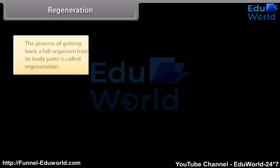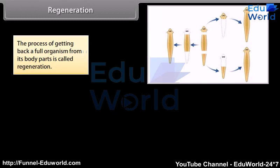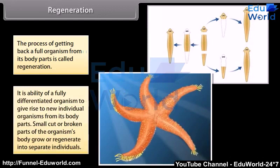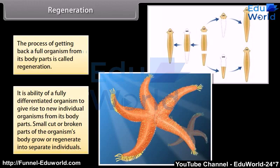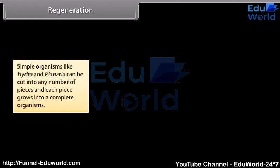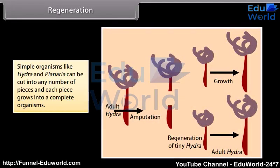The process of getting back a full organism from its body parts is called regeneration. It is the ability of a fully differentiated organism to give rise to new individual organisms from its body parts. Small cut or broken parts of the organism's body grow or regenerate into separate individuals. Simple organisms like hydra and planaria can be cut into any number of pieces, and each piece grows into a complete organism.